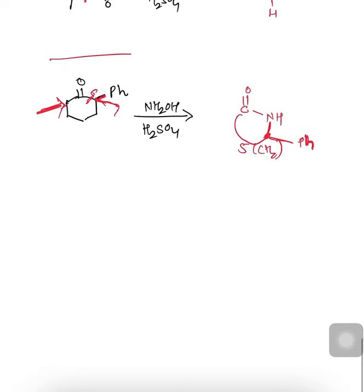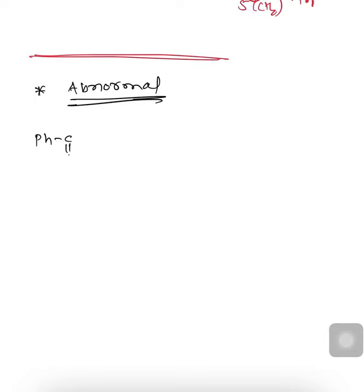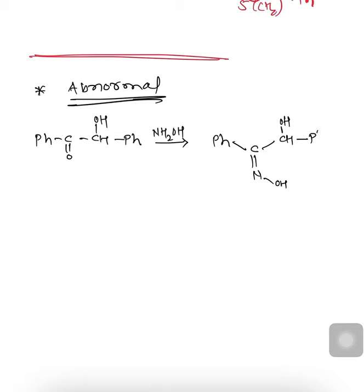There are some abnormalities observed in the Beckmann reaction — the abnormal Beckmann reaction. Consider this example: Ph-C(=O)-CH(OH)-Ph. When we carry out the reaction with hydroxylamine NH2OH, in the first step there is formation of a ketoxime, where the adjacent carbon has C-OH and one Ph group.